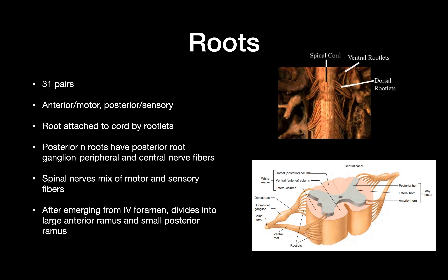There are 31 pairs of spinal nerves. The anterior roots are associated with motor nerves and the posterior roots are involved in sensory information. The root is attached to the cord by rootlets, and the posterior nerve roots have the posterior root ganglion, which conducts peripheral and central nerve fibers. The spinal nerves are a mix of both motor and sensory fibers. After emerging from the intervertebral foramen, each nerve divides into the larger anterior rami and the smaller posterior ramus.